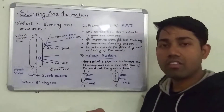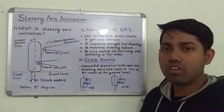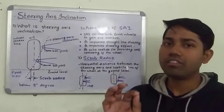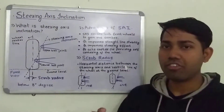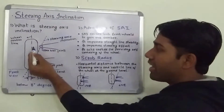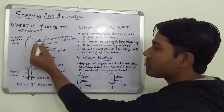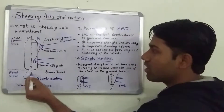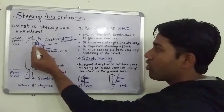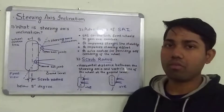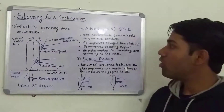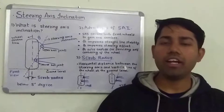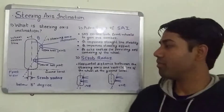Now, what is steering axis inclination? The inclination of the steering axis is called steering axis inclination. The angle between the steering axis and the wheel center line is called steering axis inclination. Steering axis inclination is given below 8 degrees and it is measured in degrees.